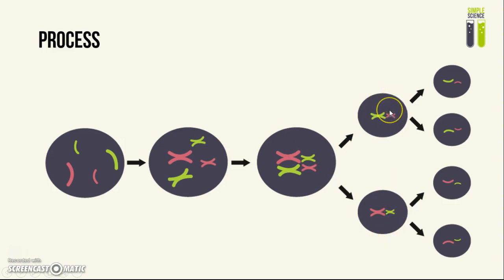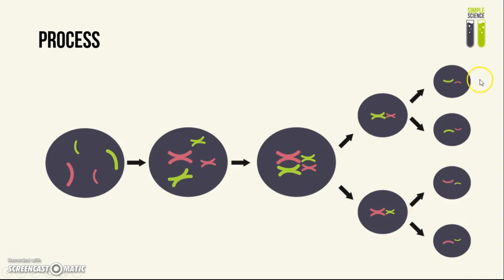Then meiosis 2 will start, and this is where it differs from mitosis. Each of these diploid cells will be split up into two again in order to produce four haploid cells that are genetically different.